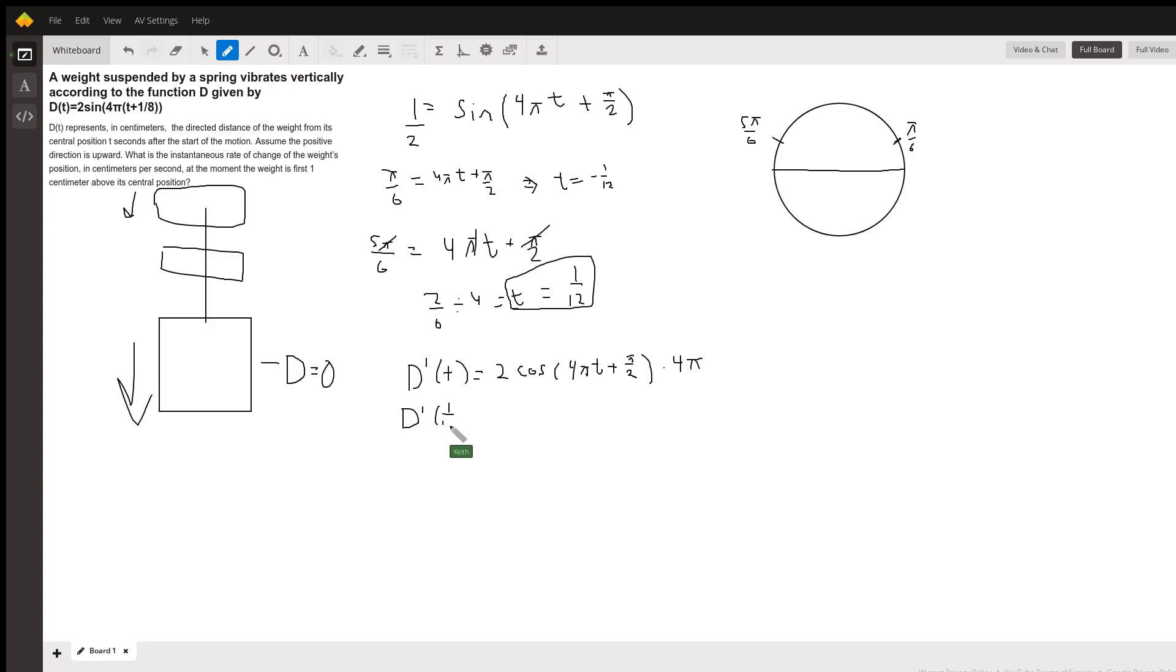So we're going to plug 1/12 into this, and so your answer is going to be 8π times the cosine of π/3 plus π/2.